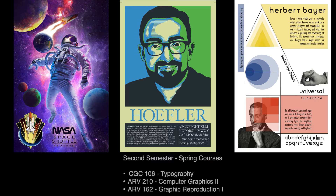In Graphic Reproduction 1, you're going to work on great projects that put work into actuality. You get to build a calendar — not only design it, but print it and actually bind it together, along with learning all the techniques that go into not just creating, but how to actually produce a piece. Computer Graphics 2 is a continuation of what you had in the fall.